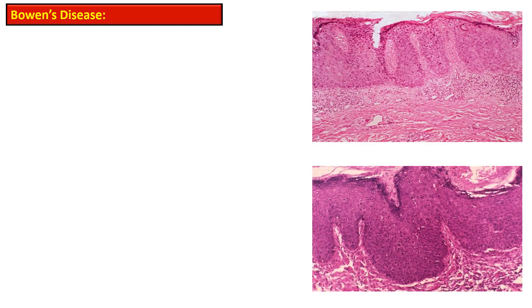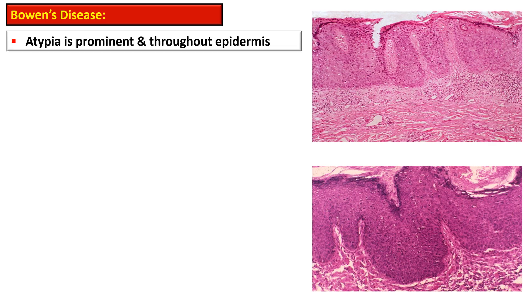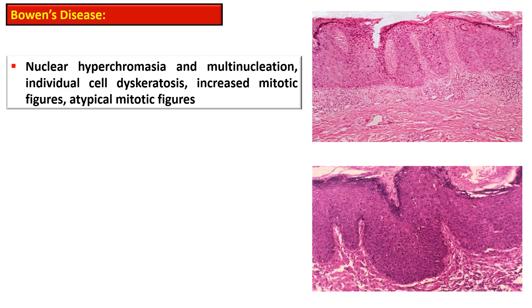This photomicrograph shows the histopathological appearance of Bowen's disease. Atypical features are present throughout the epidermis. There is nuclear hyperchromasia, multinucleation, individual cell dyskeratosis, increased mitotic figures, and presence of atypical mitotic figures.